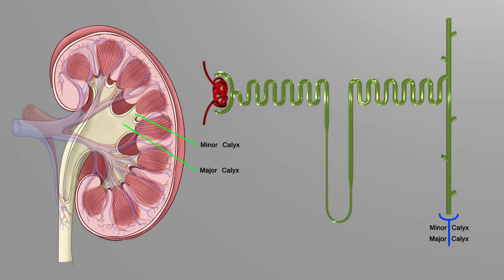The major calyx will empty into the renal pelvis, which is this large area. You can see it unites all of the major calyces together.